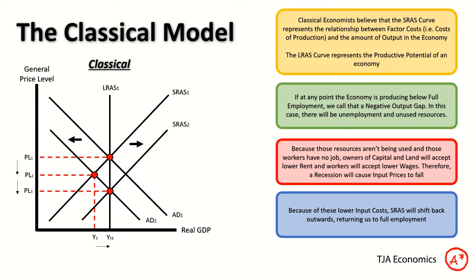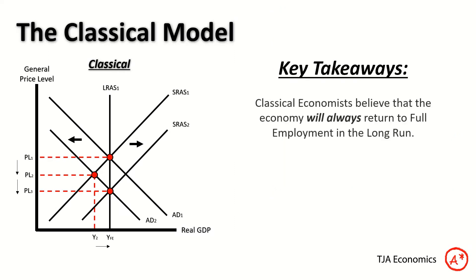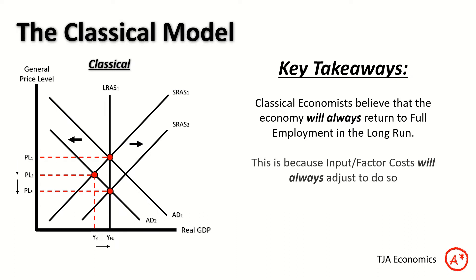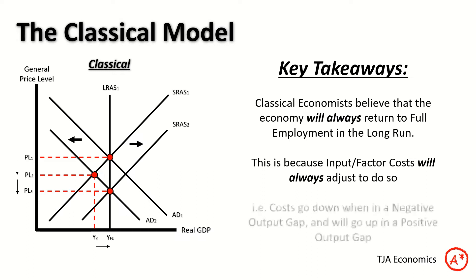Key takeaway: classical economists believe that the economy will always return to full employment in the long run. This is because input and factor costs will always adjust — costs go down in a negative output gap or recession, and they go up in a positive output gap — returning us to full employment.